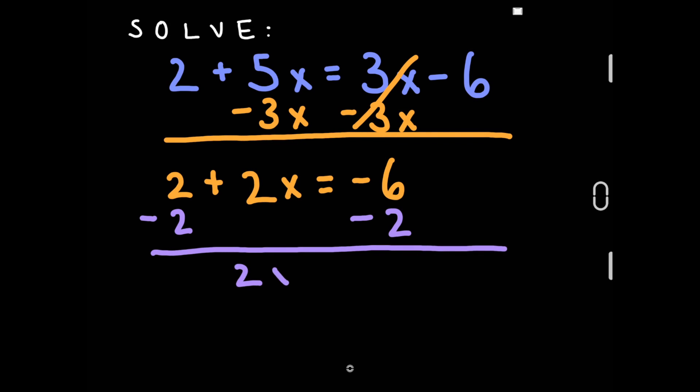Negative 6 minus 2 would equal negative 8. Now our equation will look like 2x equals negative 8. Divide 2 on both sides and the final answer is x equals negative 4.